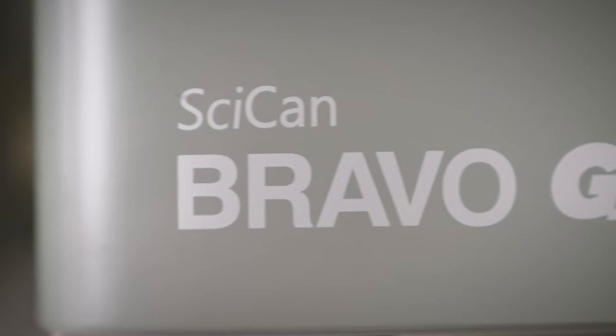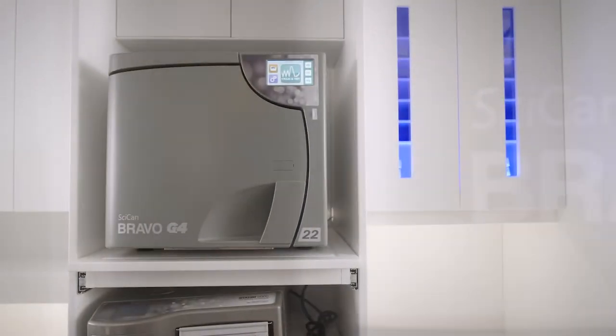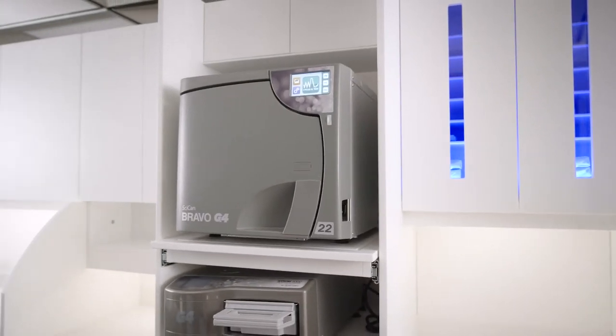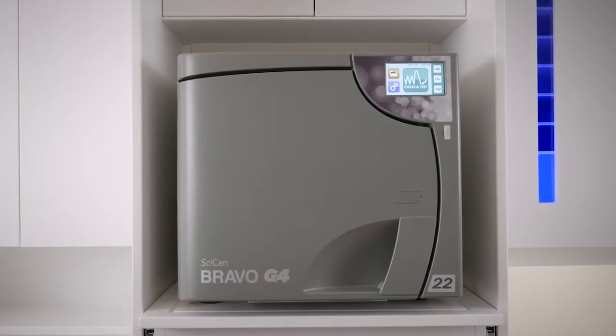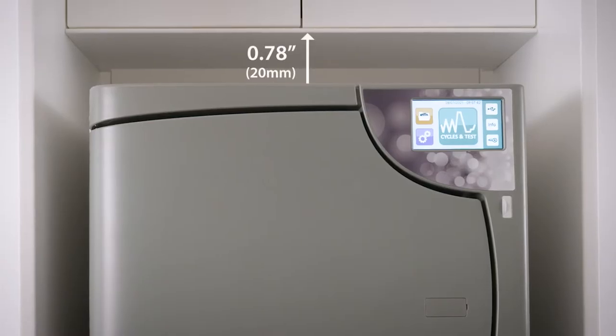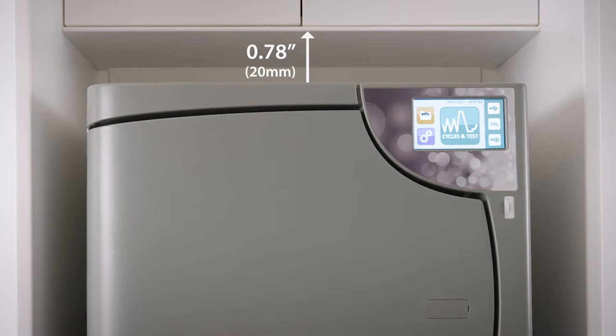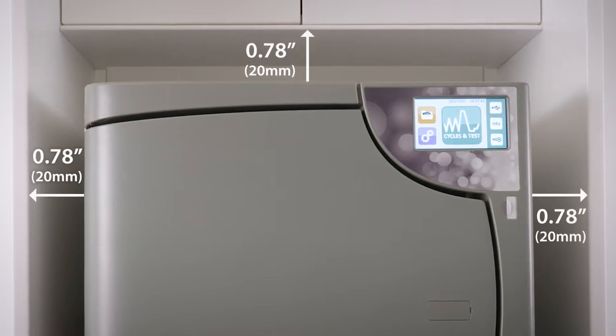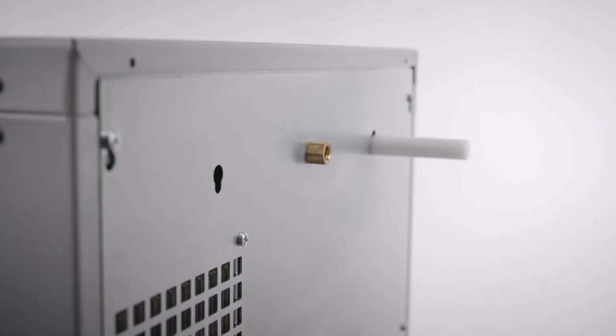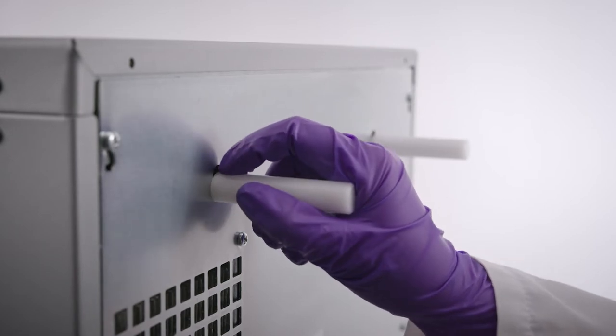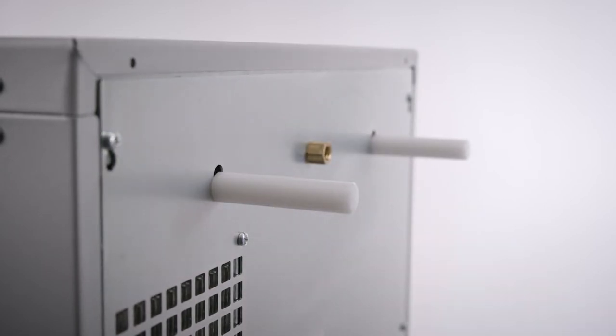When installing the Bravo G4, ensure there is adequate space around the machine to provide effective ventilation, including 20mm or 0.78 inches space for the top, left and right sides of the machine, and 70mm or 2.75 inches space at the back. Spacers are provided with the unit to ensure the proper spacing at the back.